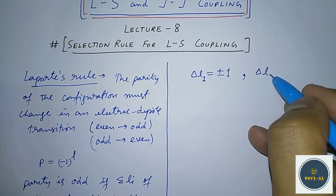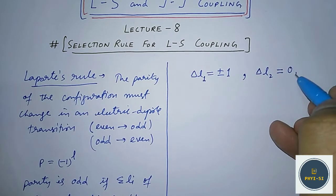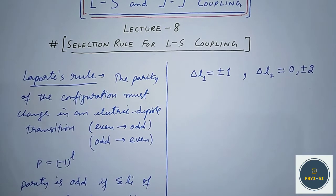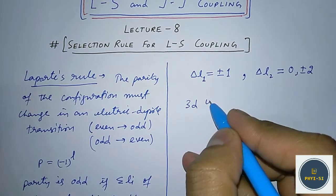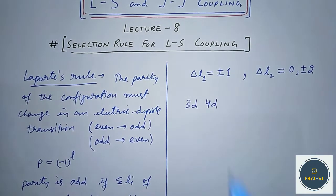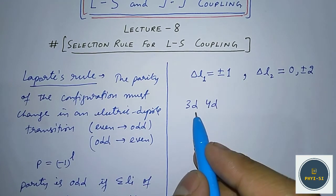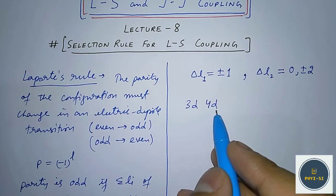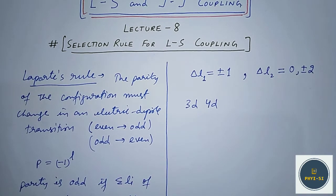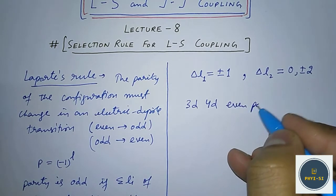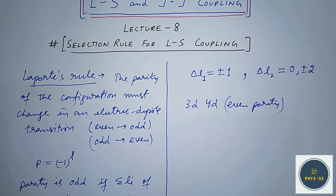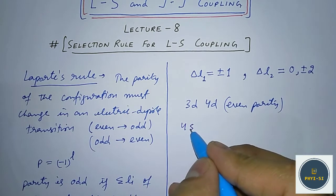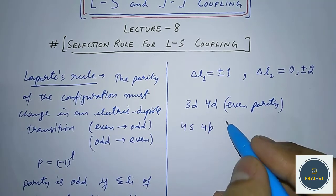For example, suppose we have a 3d and a 4d electron. For d, L = 2, so the parity is even. We have another configuration with 4s and 4p: for p, L = 1, and for s, L = 0, giving odd parity.